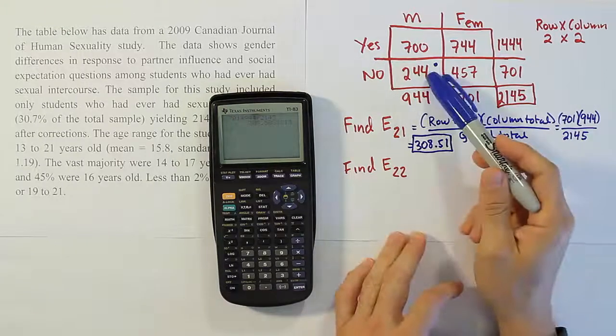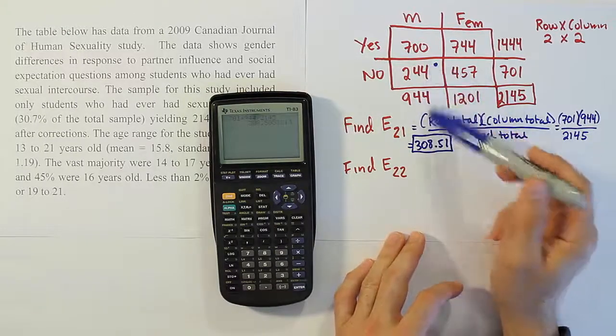If they're independent, then this is what we'd expect to see in this cell based on the total here that we have. Of course, we see 244. So there's a difference between them. And a fairly large difference.